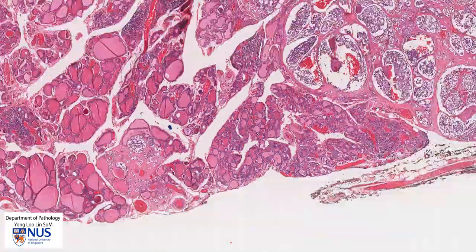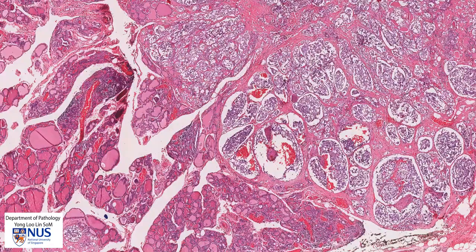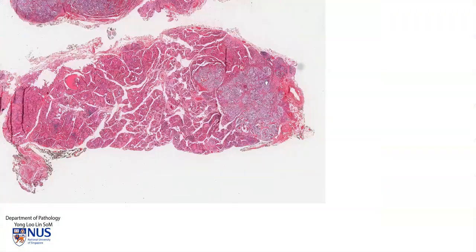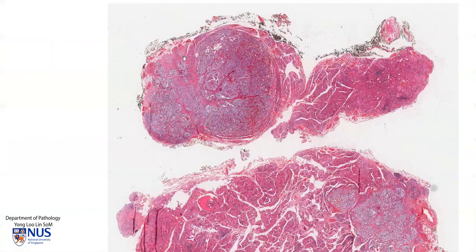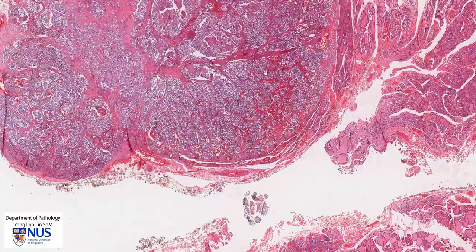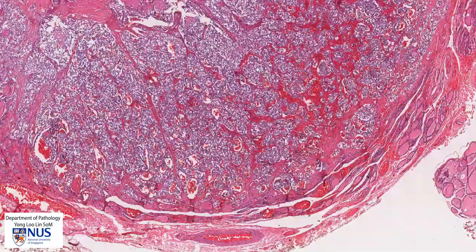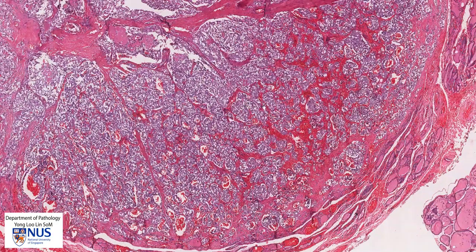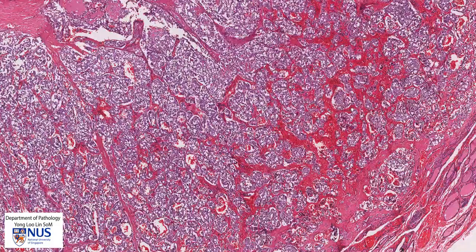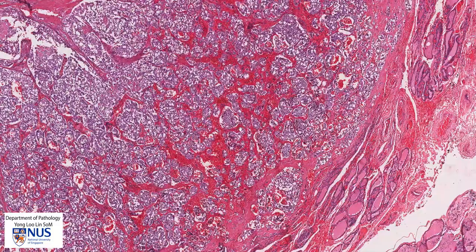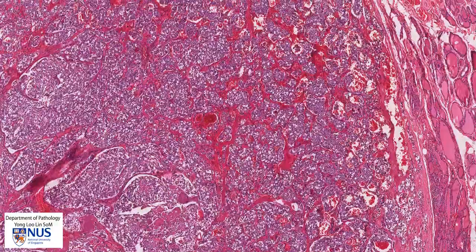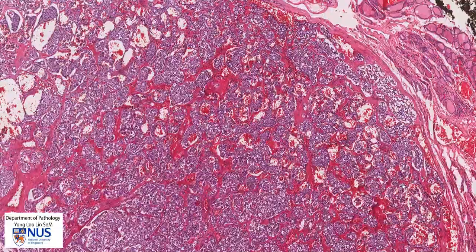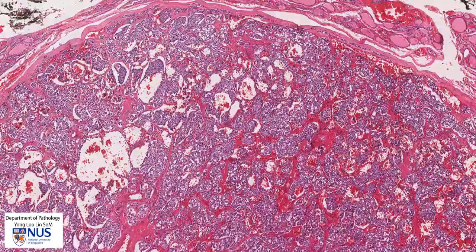Now let's take a look at the tumor, and this is better seen in the other section here. On low magnification we can see that the tumor appears to be quite circumscribed in some areas.